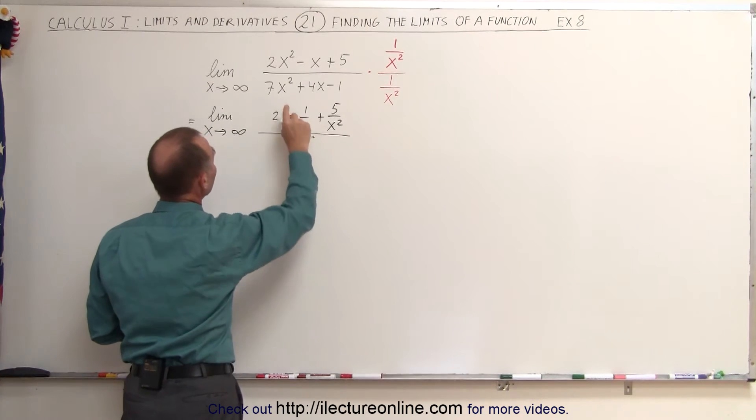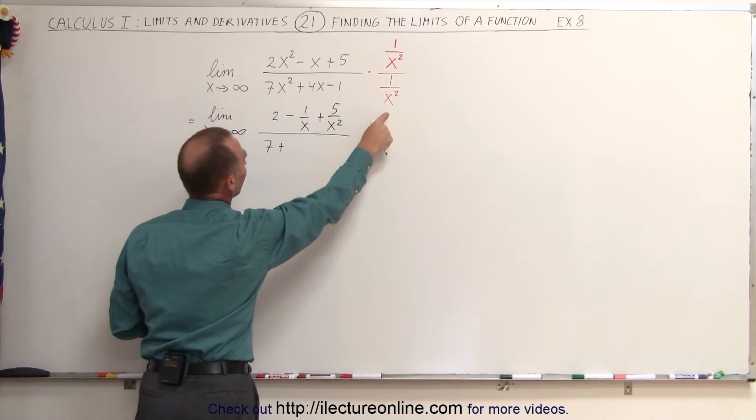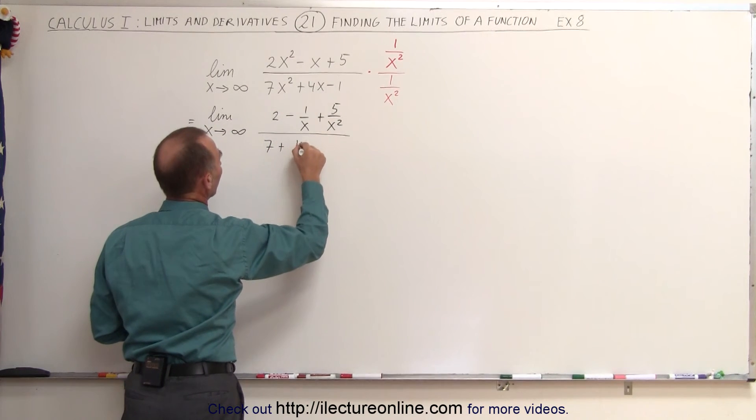We do the same for the denominator. x squared divided by x squared is 1, so we get 7 plus x divided by x squared is 1 over x. So we get 4 divided by x.